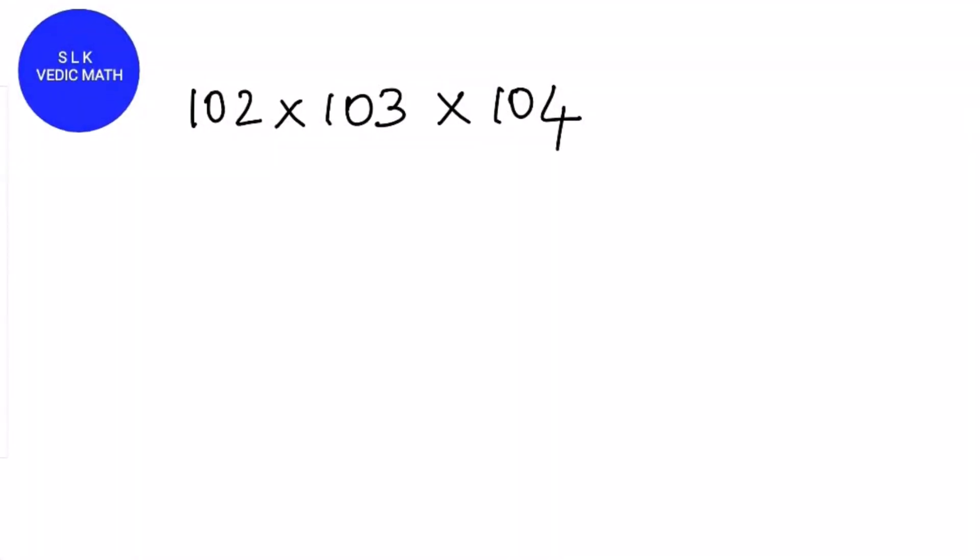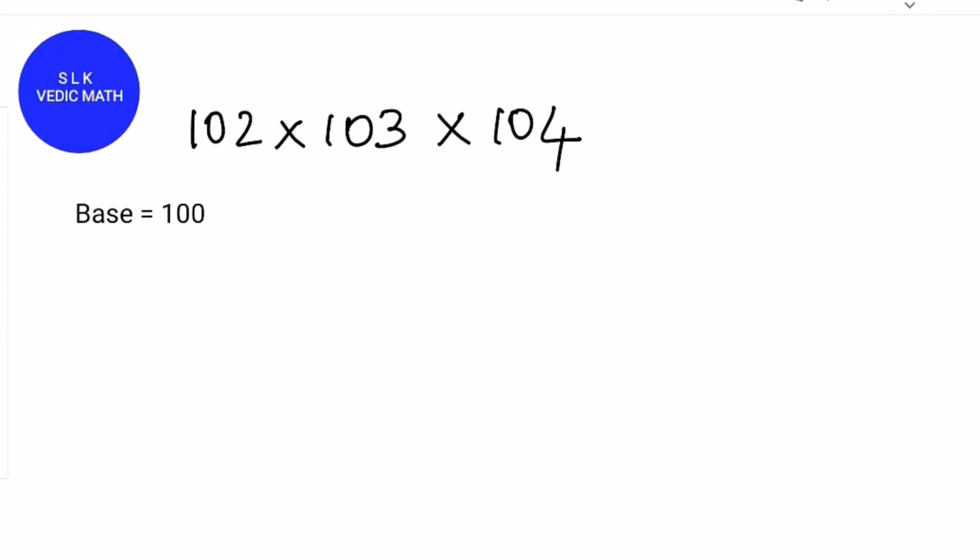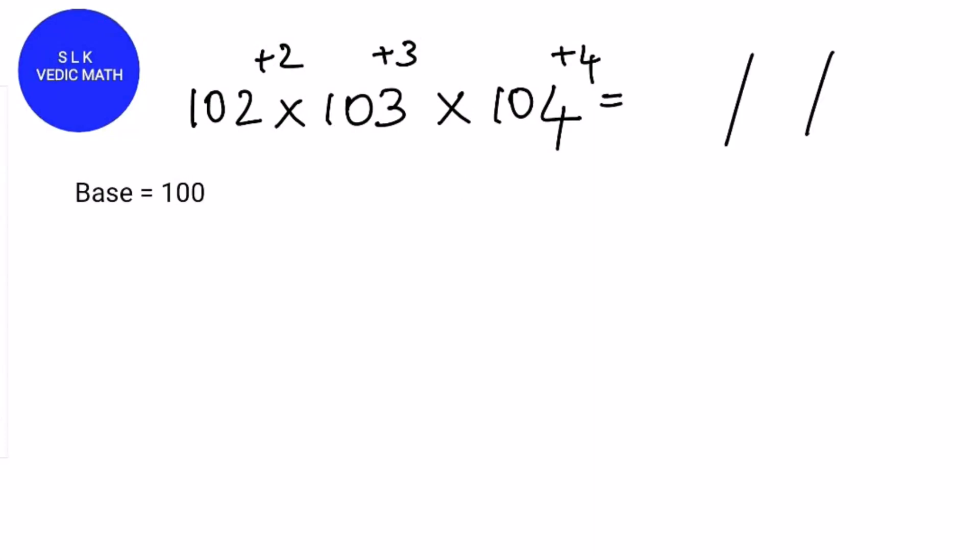Let's try one more example. 102 × 103 × 104. The base is 100. 102 is 2 more than 100, so write plus 2. 103 is 3 more than 100, so write plus 3. 104 is 4 more than 100, so write plus 4. Next put 2 strokes to divide it into 3 parts.